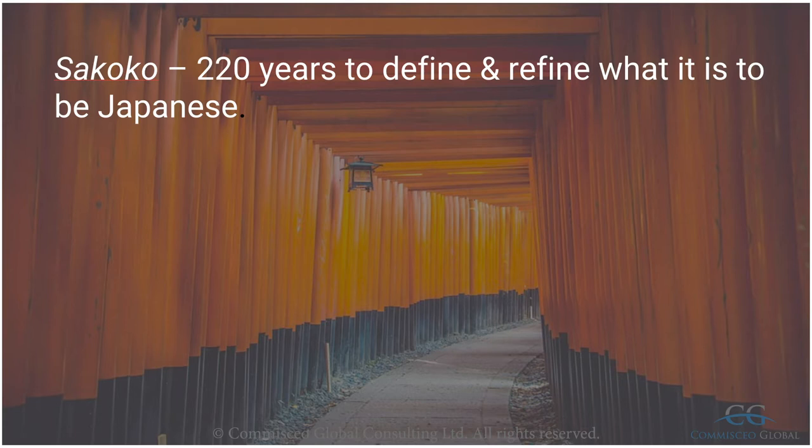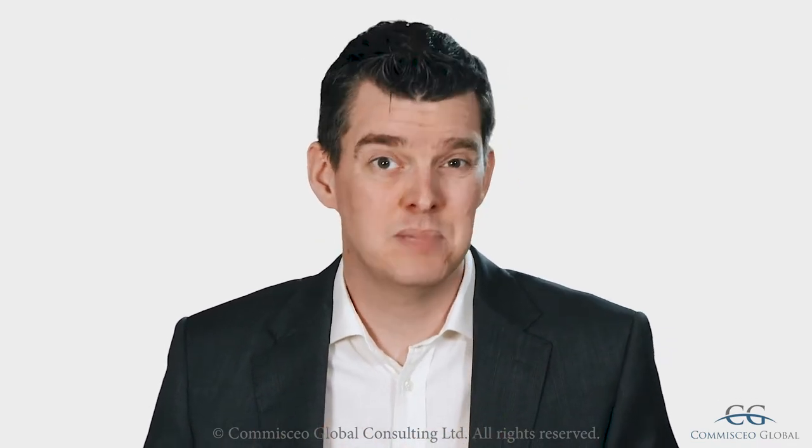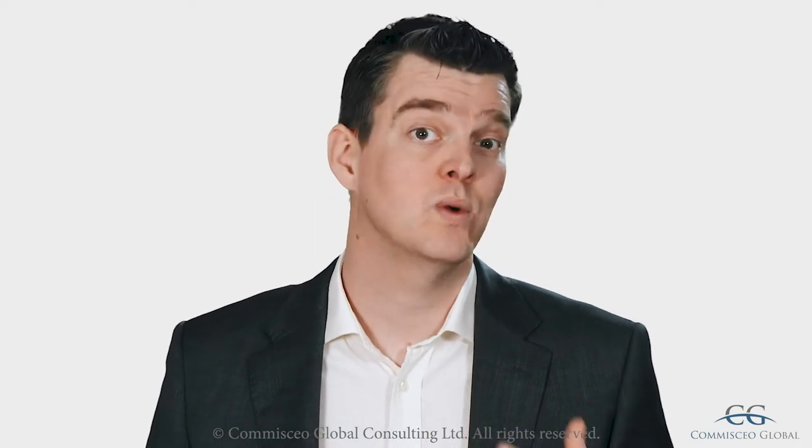A major event in Japanese history that accounts for much of their cultural uniqueness stems from a period known as Sakoku, which is roughly translated as closed country. From the 1630s, Japan was essentially cut off from the world for 220 years. Other than some trade agreements, the Japanese were not allowed to leave Japan and foreigners could not enter. This had a profound impact as the country went through a process of introspection and consolidation of the local culture. It's in these years that the Japanese defined and refined what it meant to be Japanese.